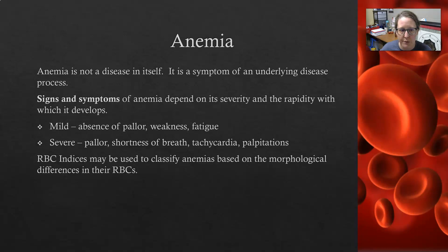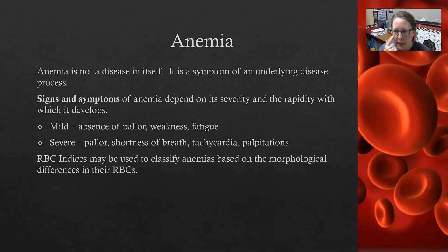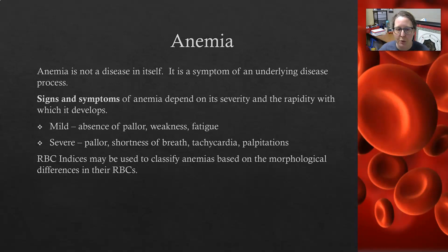The signs and symptoms of mild anemia are weakness and fatigue, and usually there is no pallor. If somebody has a dark skin tone, you can look inside the lips and at the mucous membranes to check, or pull the eye down to see if it is pale. In severe anemia, however, there is pallor and pale mucous membranes, shortness of breath, and tachycardia — a fast heart rate and heart palpitations.